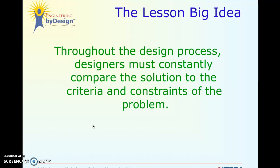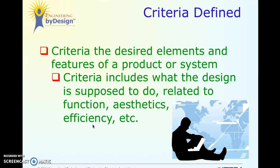Today we're focusing on one part of the engineering design process: criteria and constraints. The lesson big idea is that throughout the design process, designers must constantly compare the solution to the criteria and constraints of the problem. So first let's talk about criteria. Criteria is the desired elements and features of a product or system — think of it as your requirements for whatever your challenge, project, or design may be.